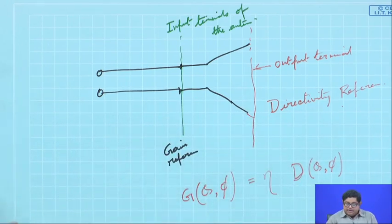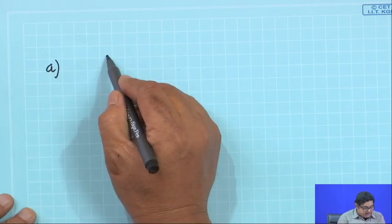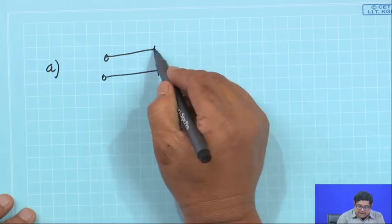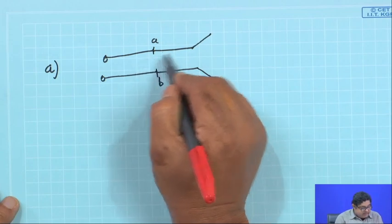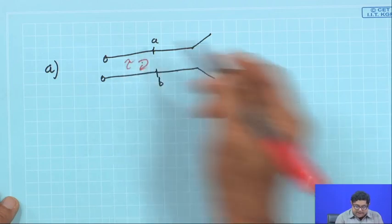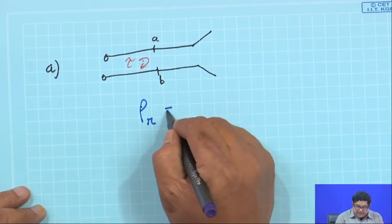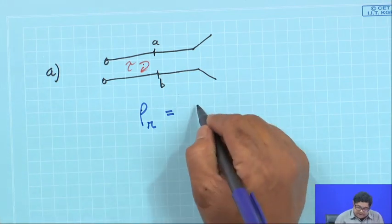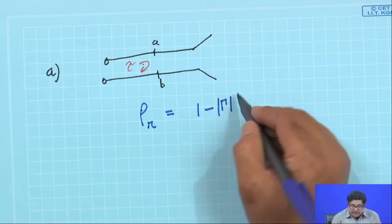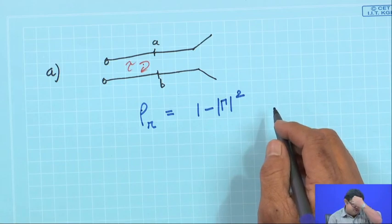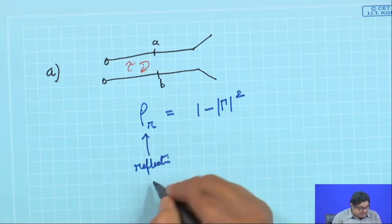There are several efficiencies that come into play. The first efficiency is the reflection efficiency. There is a transmission line and then the antenna is connected. At the input terminal of the antenna, if there is an impedance mismatch, there will be some reflection. This reflection due to mismatch gives rise to an efficiency, which we generally call ρ_r, the reflection efficiency. In power terms, if the voltage reflection coefficient is Γ, then it is 1 − |Γ|² — or equivalently 1 − Γ·Γ*.